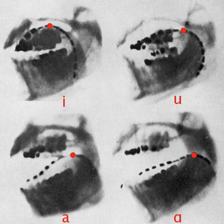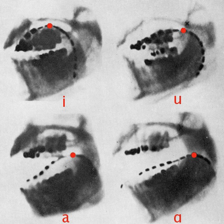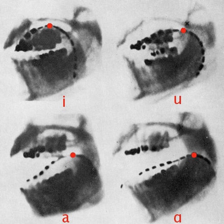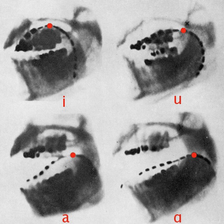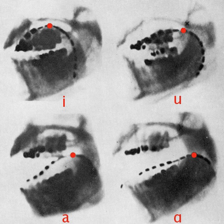IPA diacritics may be doubled to indicate an extra degree of the feature indicated. This is a productive process, but apart from extra high and extra low tones being marked by doubled high and low tone diacritics, and the major prosodic break being marked as a double minor break, it is not specifically regulated by the IPA. Note that transcription marks are similar: double slashes indicate extra phonemic, double square brackets especially precise, and double parentheses especially unintelligible. The stress mark may be doubled to indicate an extra degree of stress, such as prosodic stress in English.